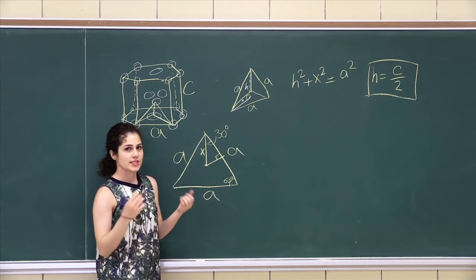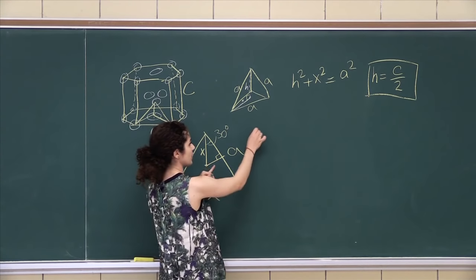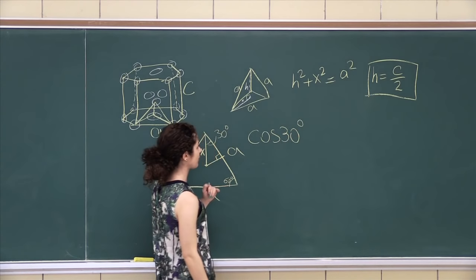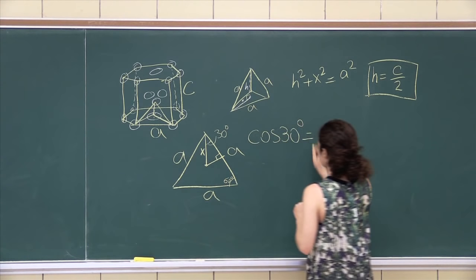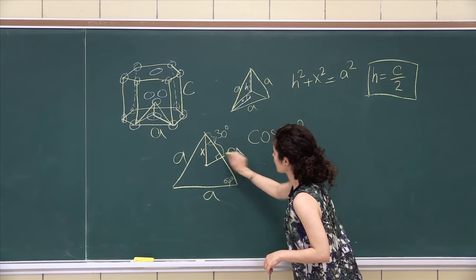And if you know your sine, cosine rules, you can see that cos 30 is actually, so SOH CAH TOA, A over 2, which is this little section, all over X.